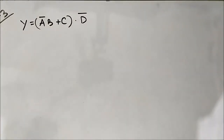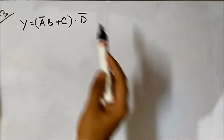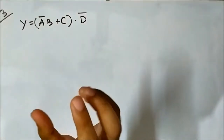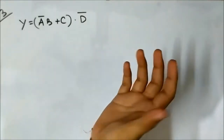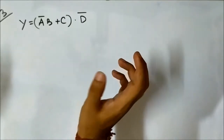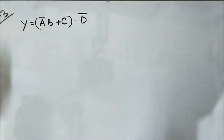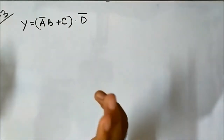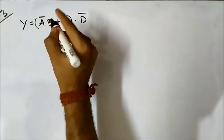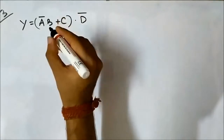Hello friends, this is the third question related to logic implementation using NOR universal gates. This is a four-variable boolean expression — so far we have discussed only three-variable expressions. Here we have introduced an extra variable D, and we will try to implement it using NOR gates.